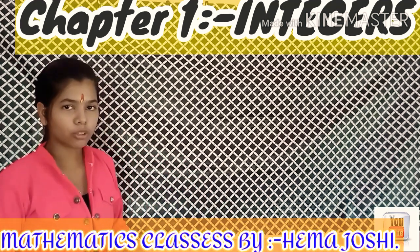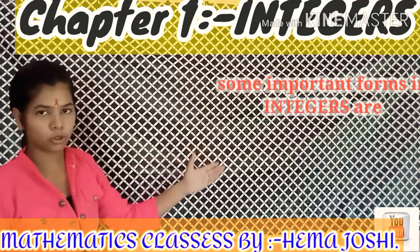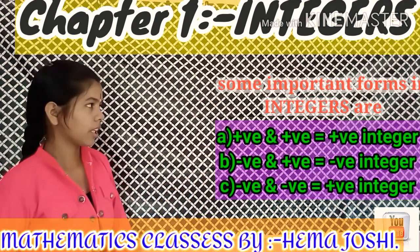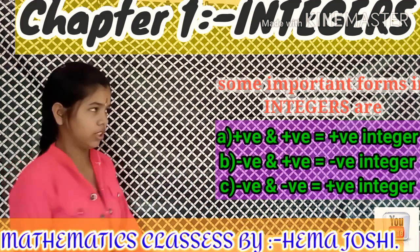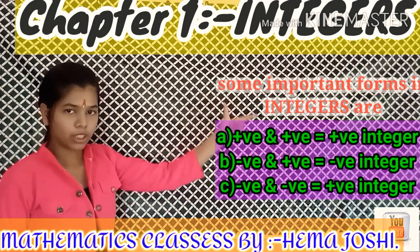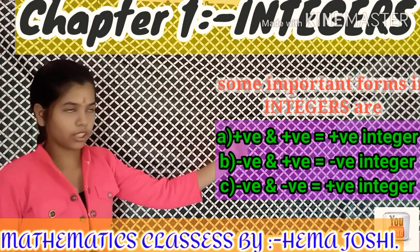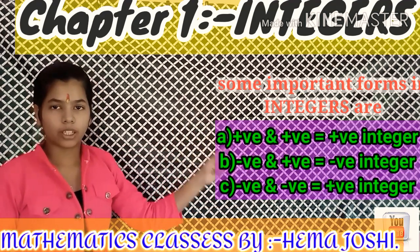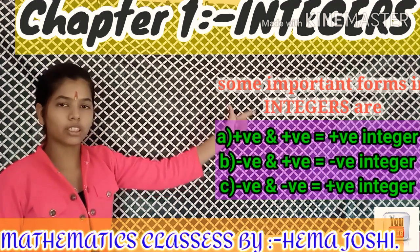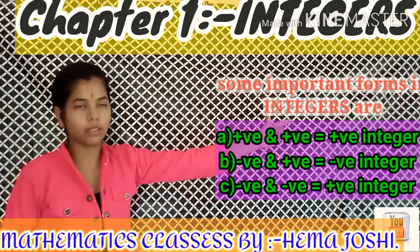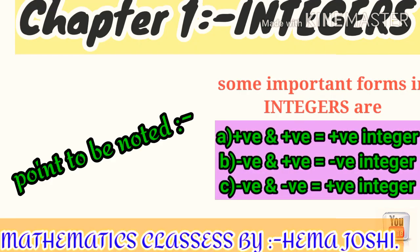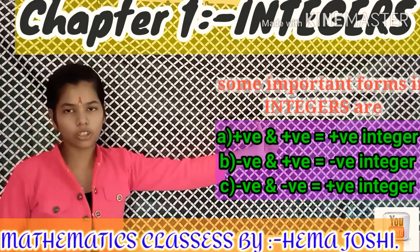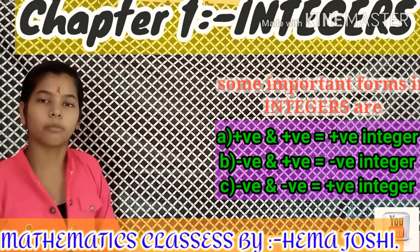There are three important rules for integer operations. First, if the first integer is positive and the second integer is also positive, the answer will be positive. Second, if the first integer is positive and the second is negative, the answer will be negative. Third, if both integers are negative, the answer will be positive.